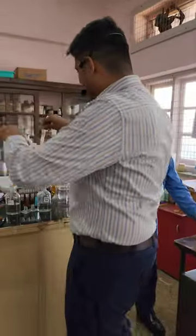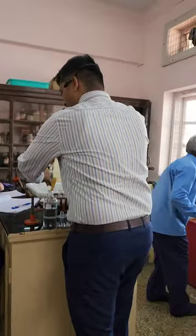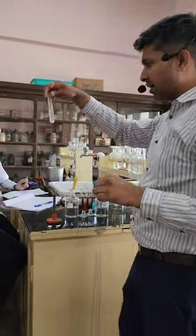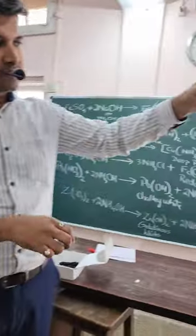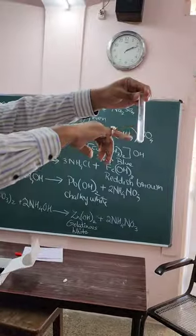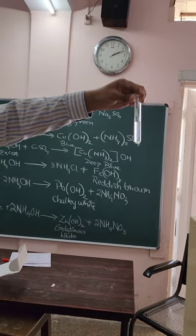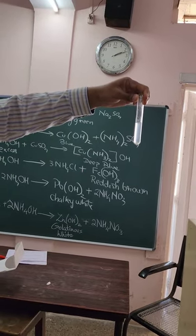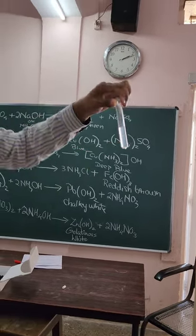More gelatinous white you will be able to see with NaOH. With NaOH, you can see the PPT is still developing and it is a lighter, transparent PPT — translucent, you can see.